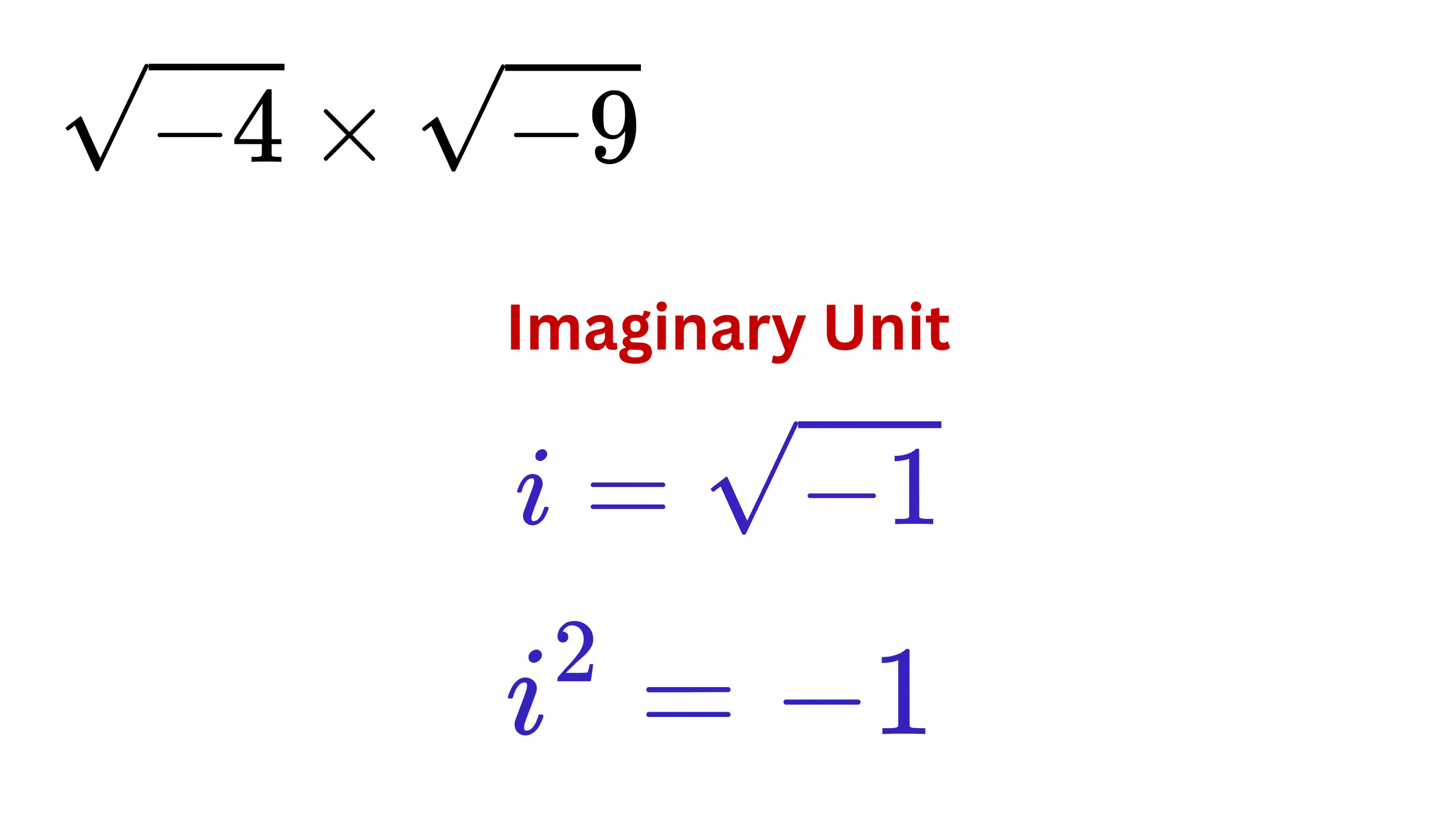Now let us redo the problem the correct way. Instead of combining everything at once, we simplify each square root separately using i.